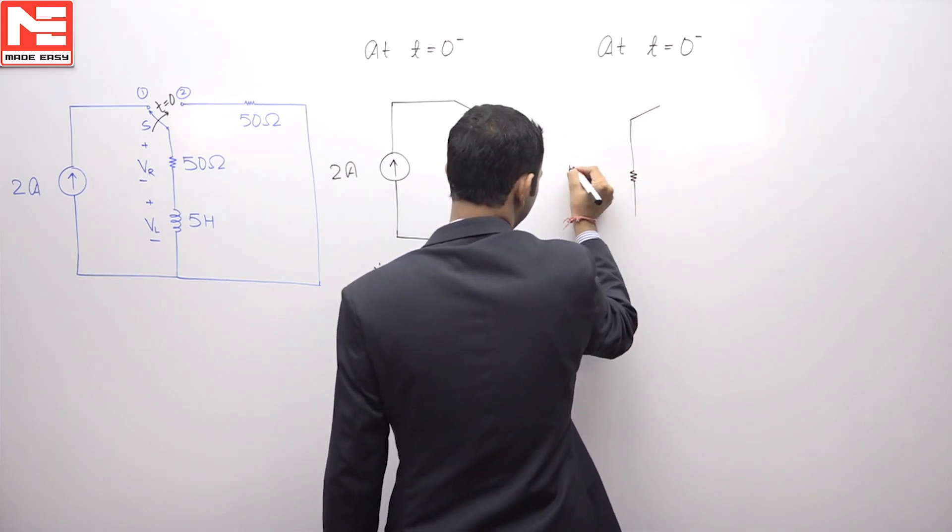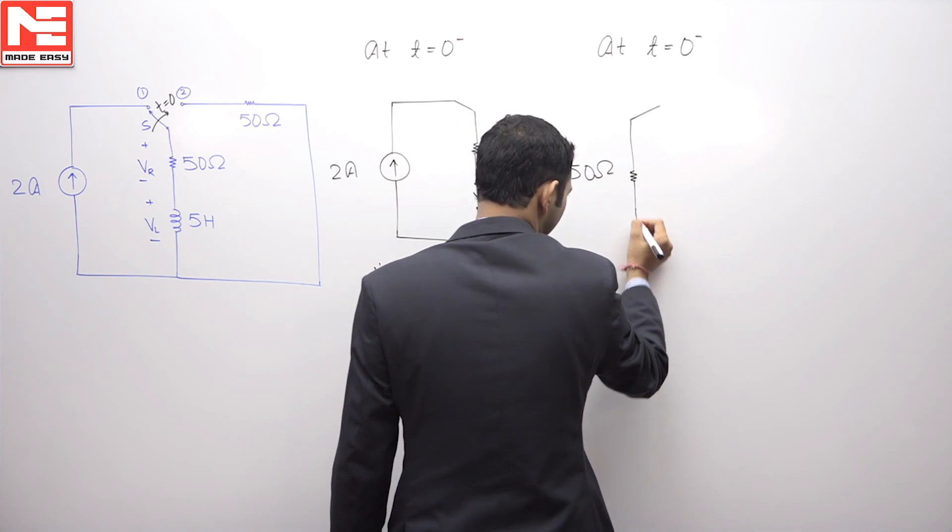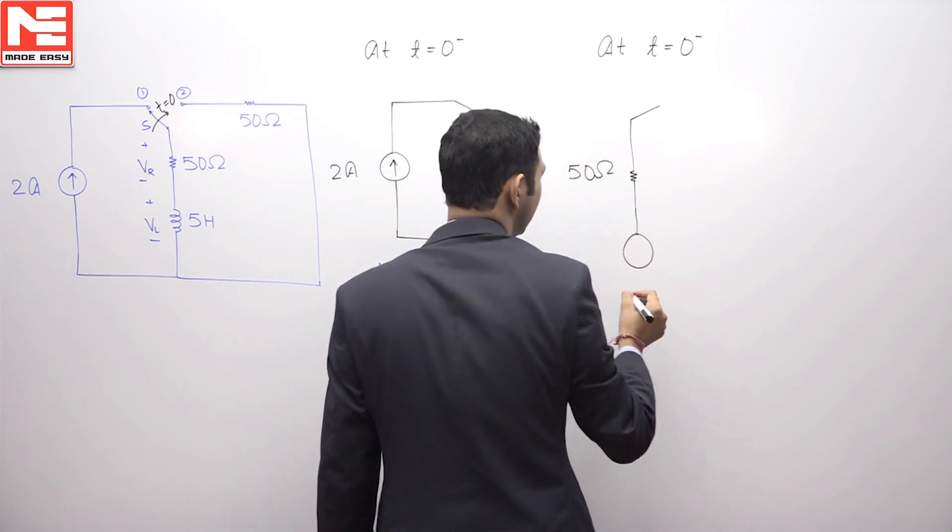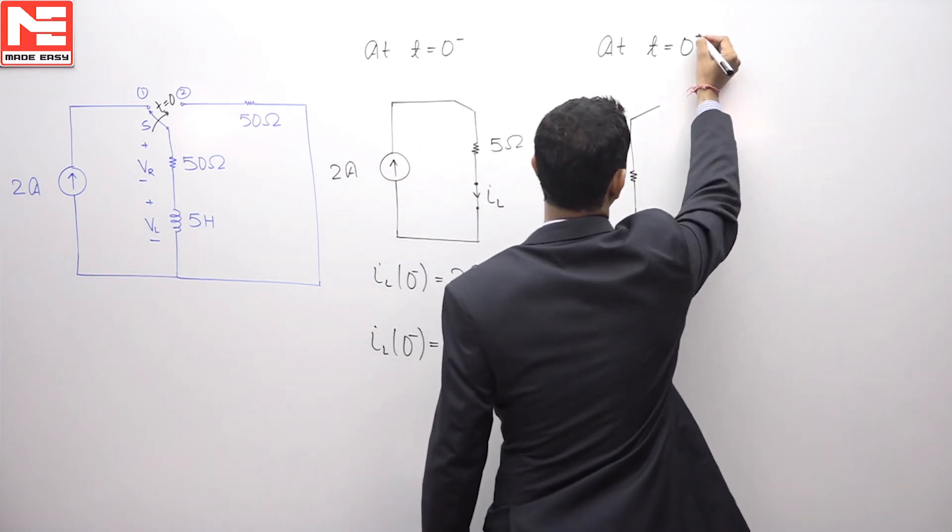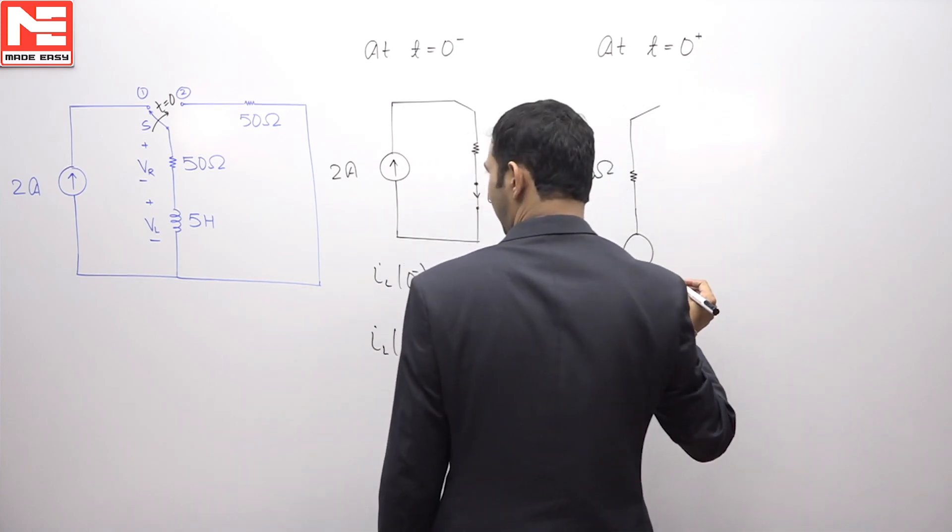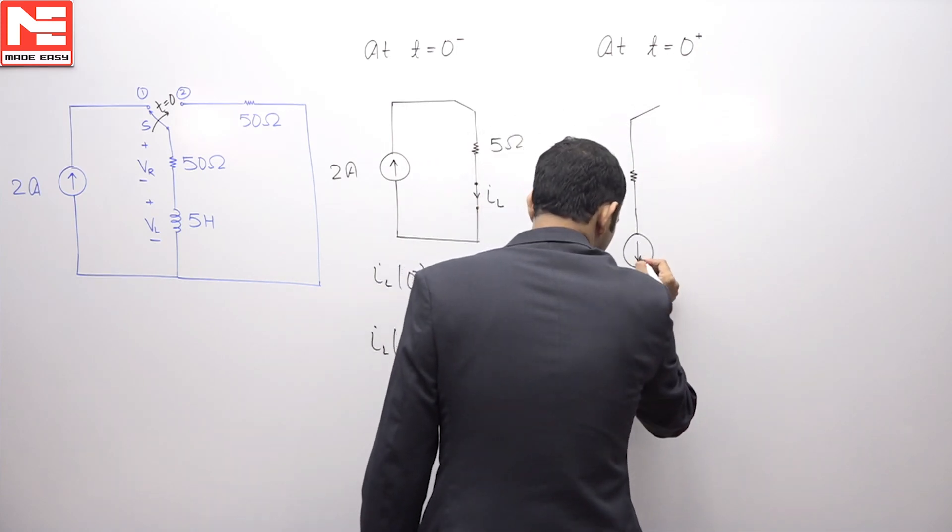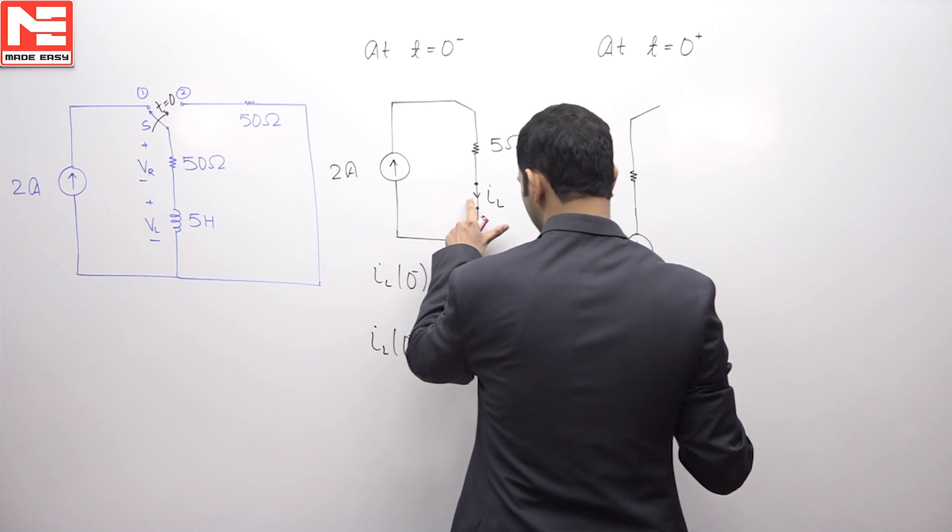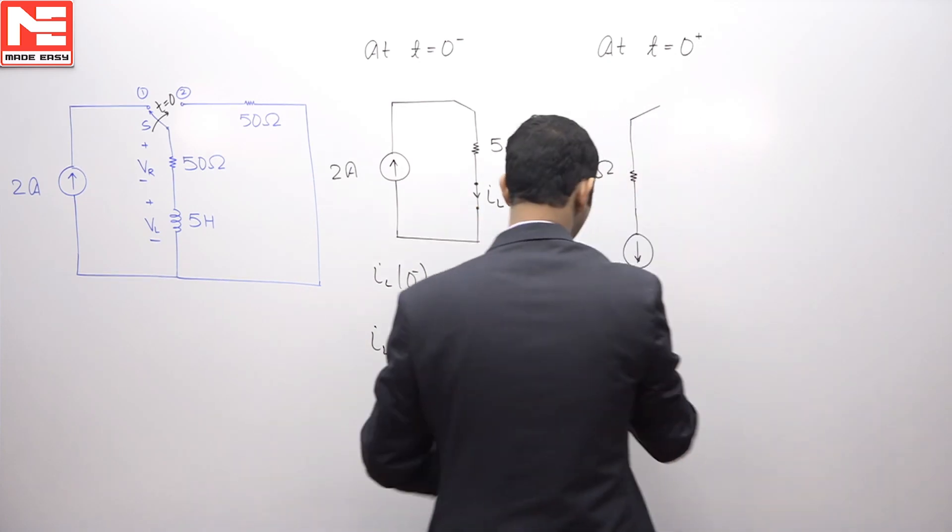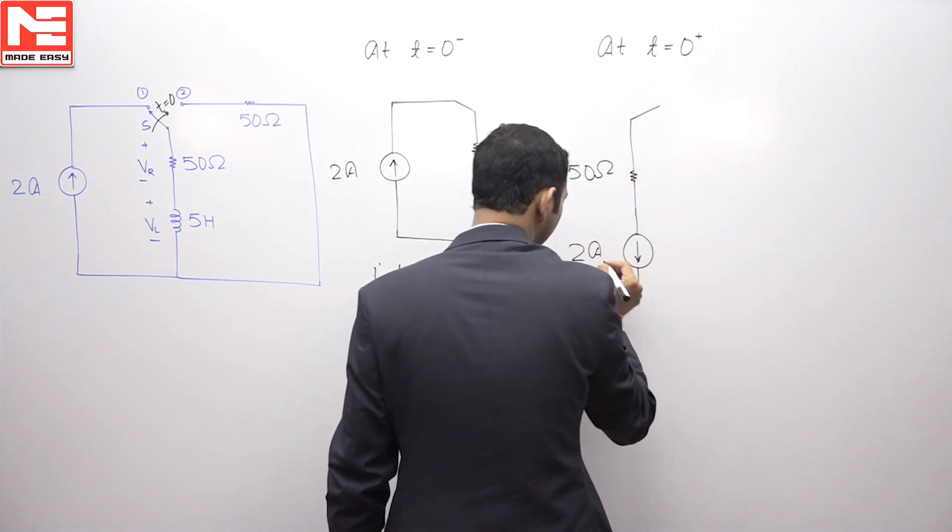This is 50 ohm and inductor will be replaced by the current source as at particular instant, it will not allow the sudden change in current. So, the current direction will be same as it was previously, the value will be 2 ampere.